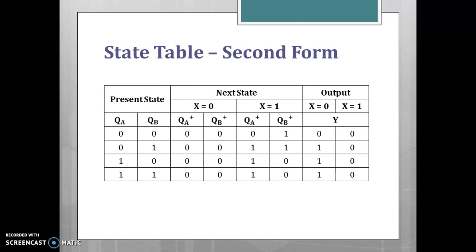This is another form of the state table, where one column represents the next state for input X = 0 and two columns represent the next state for X = 1. Similarly, one column represents the output for X = 0 and another column represents the output for X = 1.